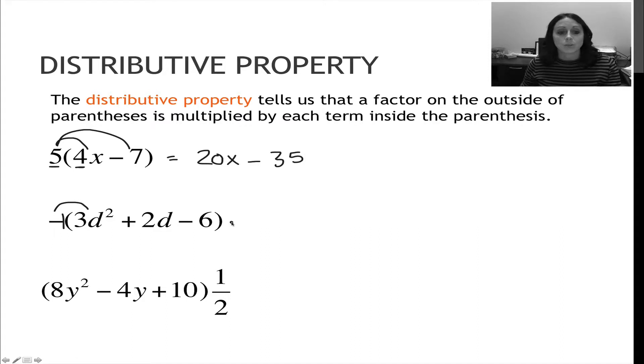So negative 1 times 3d squared is negative 3d squared. Negative 1 times positive 2d is negative 2d. Now notice I said negative 2d, but I wrote down minus 2d. It's because those mean the same thing. I could have written plus negative 2d. I chose to write minus 2d.